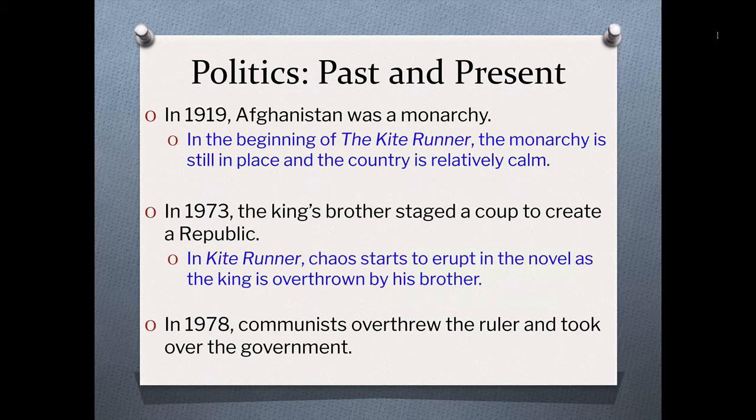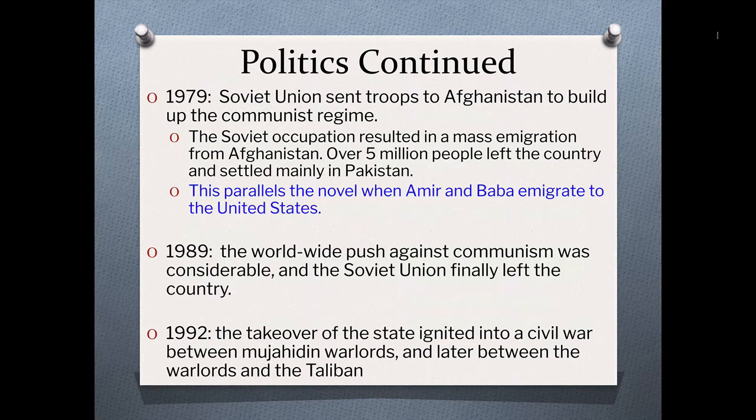In 1978, communists overthrew that ruler and took over the government. Then a year later, the Soviet Union actually sent troops into Afghanistan to build up that communist regime. That Soviet occupation resulted in over 5 million Afghans emigrating, mostly to Pakistan. This is also paralleled in the novel because Amir, our protagonist, and Baba, his father, emigrate to Pakistan and ultimately to the United States.